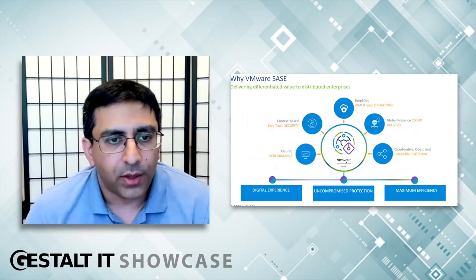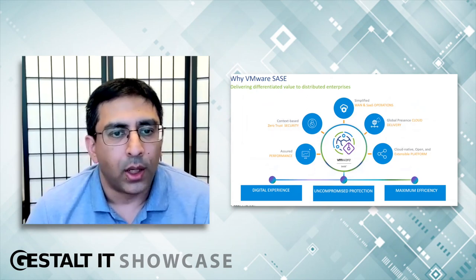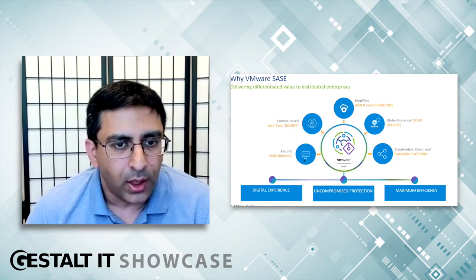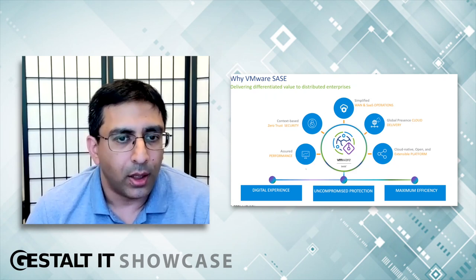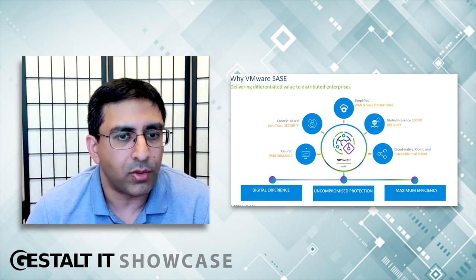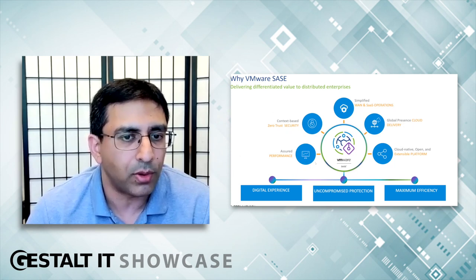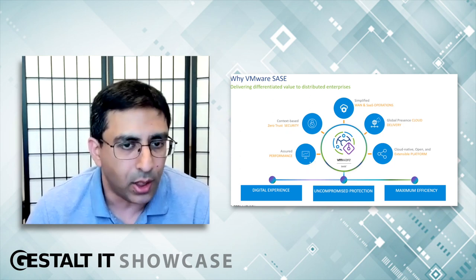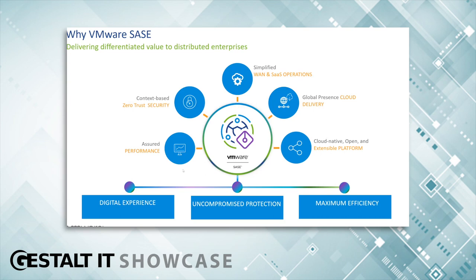Pulling all this together — we talked about the observability that ENI offers and the active controls that SD-WAN offers in terms of performance. We're able to move traffic back and forth between different links, recover from packet loss, and do super easy QoS. We identify thousands of applications and have pre-configured QoS policies that can of course be overridden.